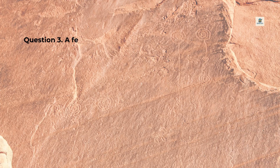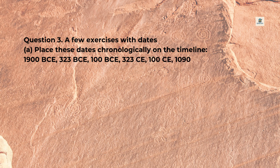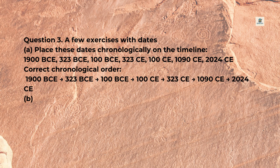Question 3: A few exercises with dates. A — Place these dates chronologically on a timeline: 1900 BCE, 323 BCE, 100 BCE, 323 CE, 100 CE, 1090 CE, 2024 CE. Correct chronological order: 1900 BCE → 323 BCE → 100 BCE → 323 CE → 1090 CE → 2024 CE.